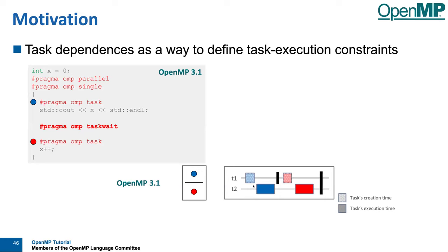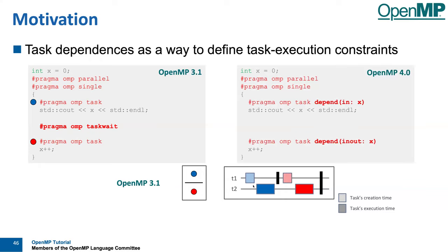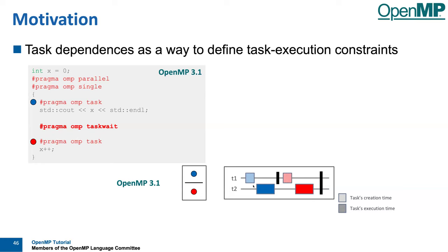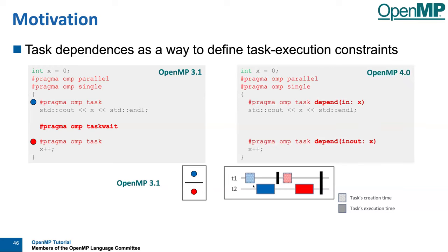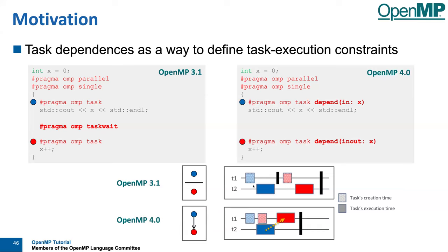You could put in a taskwait construct to make sure the first task is finished before the second starts. But if there were another task completely unrelated to all this, it would also synchronize with the red task — which is not what we want. This is where task dependencies come in. You can describe the dependency between the blue and red tasks: the blue task has an 'in' dependency on x — it consumes an existing x — and the red task has an 'inout' dependency, meaning it consumes x, modifies it, and stores it back. Now OpenMP knows the blue task must compute before the red task, without blocking unrelated tasks.